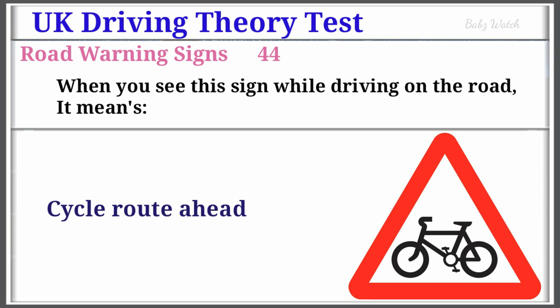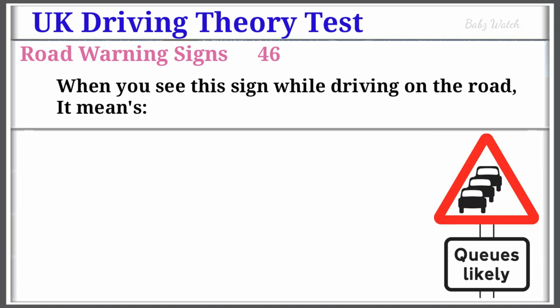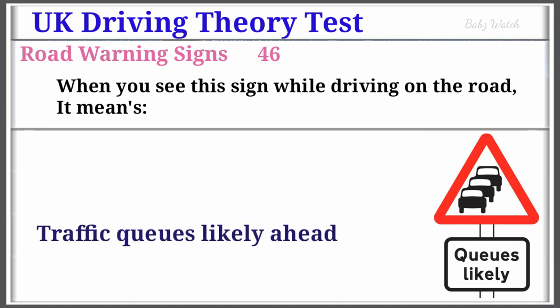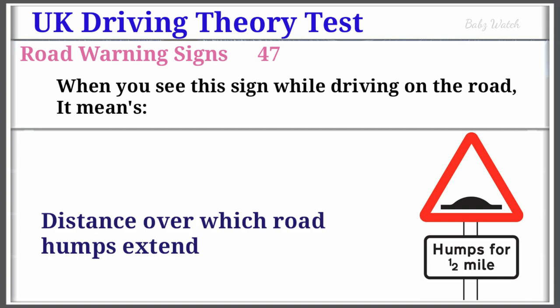UK Driving Theory Test Road Warning Sign Number 45: When you see this sign while driving on the road, it means Traffic Queues Likely Ahead. Warning Sign Number 47: When you see this sign while driving on the road, it means Distance Over Which Road Humps Extend.